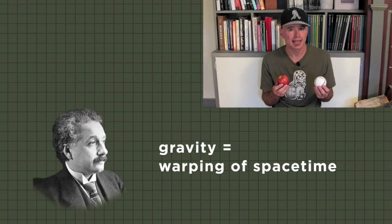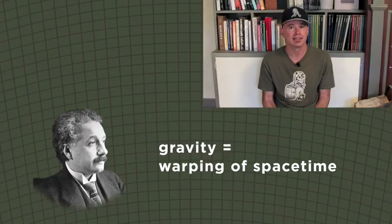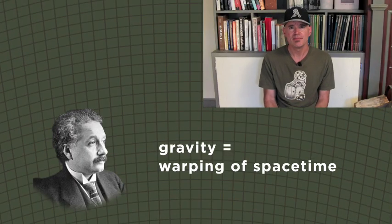For centuries, gravity was described as a kind of attraction between objects. Then Albert Einstein discovered that gravity is actually a warping of space and time. But what does that mean exactly?